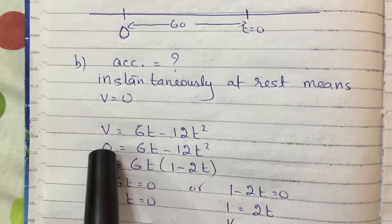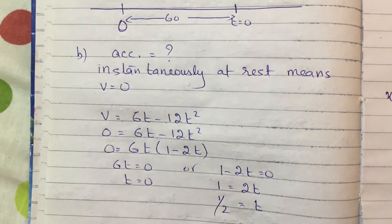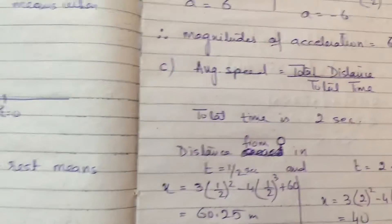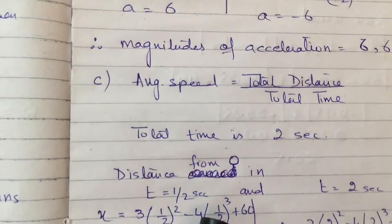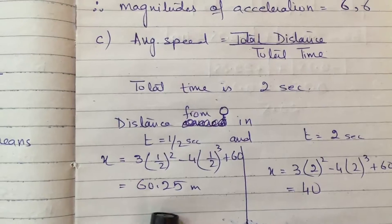Now we know from part B that when we put v equals 0, instantaneously at rest, t was 0 and 1/2. It means in half second the object took the turn. So now we need to find out how much distance was covered in half second and then in 2 seconds.